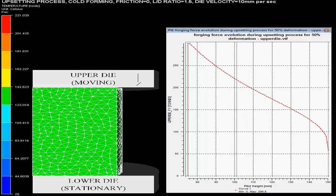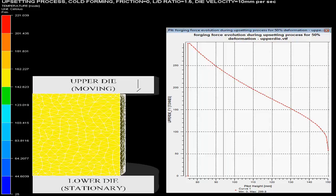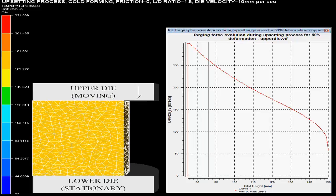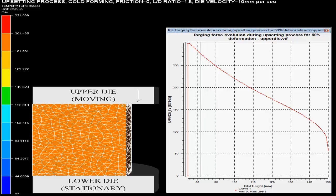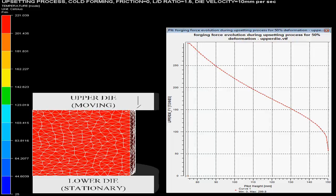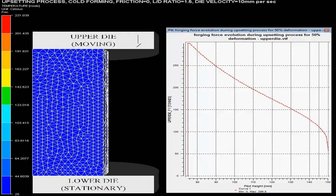The initial temperature of the billet is 25 degrees Celsius. The change in temperature is depicted by the color code shown on the left side of the video. The final temperature of the billet is 221.03 degrees Celsius. This demonstrates the cold upsetting process for a titanium billet.